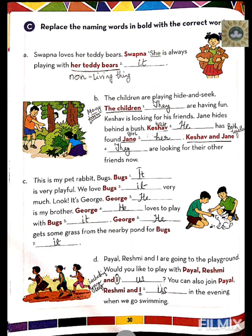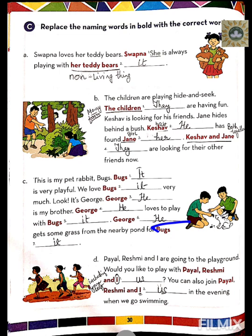Number three: It is my pet rabbit, Bugs. For 'Bugs,' we use 'it' because it is an animal. It is very playful. We love it very much. Look, it is George. George is my brother — he is a boy, so 'he.' He loves to play with Bugs, so: He loves to play with it. He gets some grass from the nearby pond — and for Bugs again, we use 'it.'